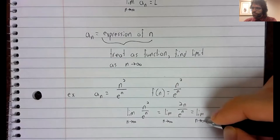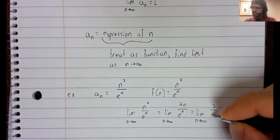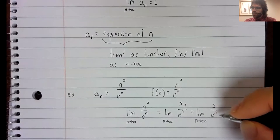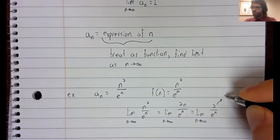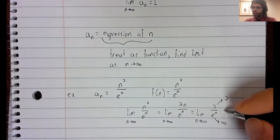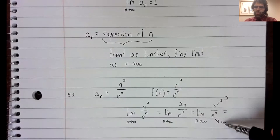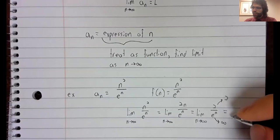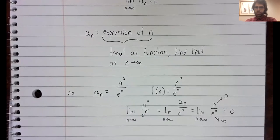But if we use L'Hopital's rule a second time, now a constant just goes to itself. E to the n goes to infinity. A finite number divided by infinity is zero.